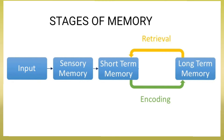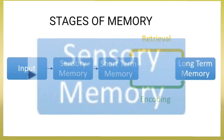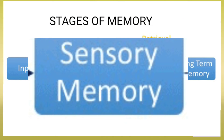The stage model of memory is often used to explain the basic structure and function of memory. This theory outlines three separate stages. One is the sensory memory. Sensory memory is the earliest stage of memory. During this stage, sensory information from the environment is stored for a very brief period of time — generally no longer than a half second for visual information and three or four seconds for auditory information. People only pay attention to certain aspects of the sensory memory, and attending to it allows some of this information to pass into the next stage, which is short-term memory.